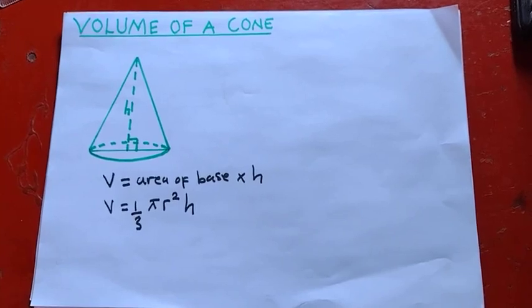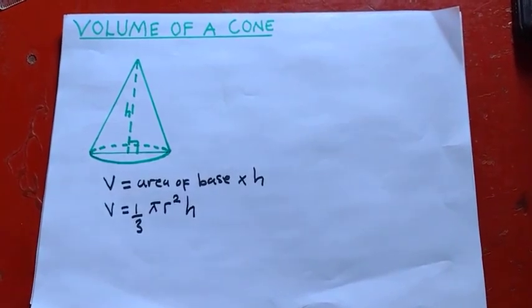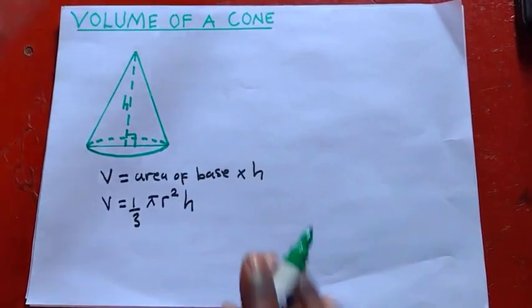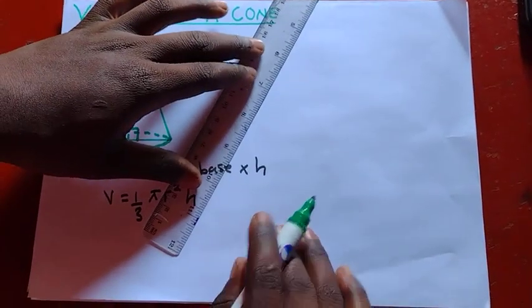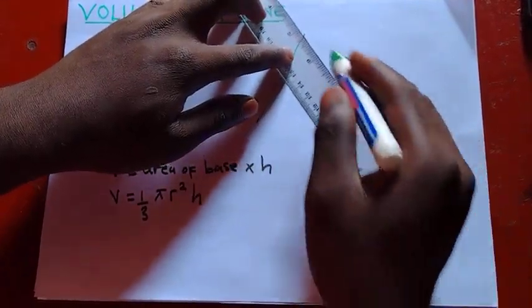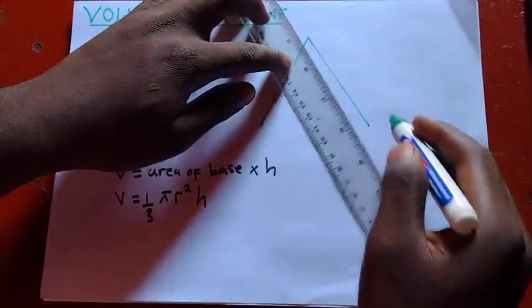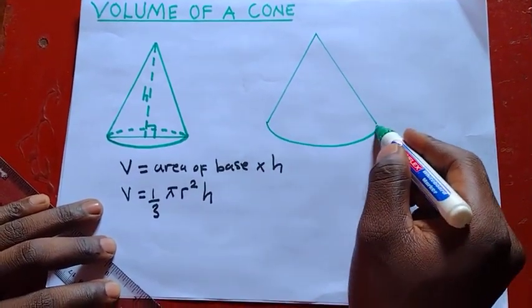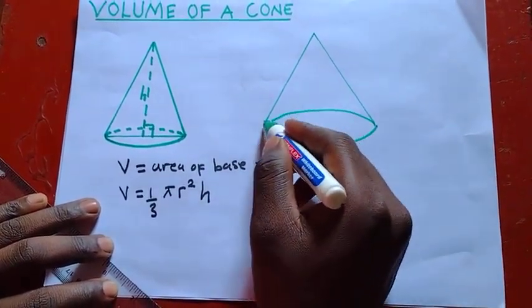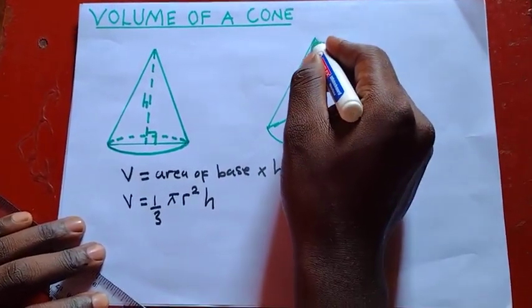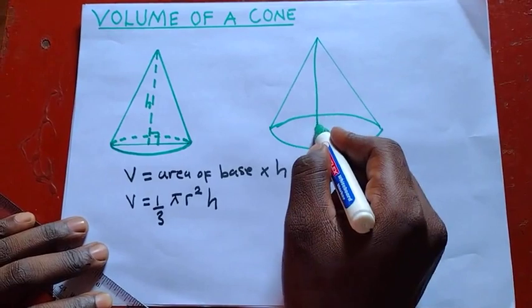Now, let's look at an example. Okay? So suppose you are given a cone. Like the way it is this one. You are given a cone. For example like this. You are given a cone like this.